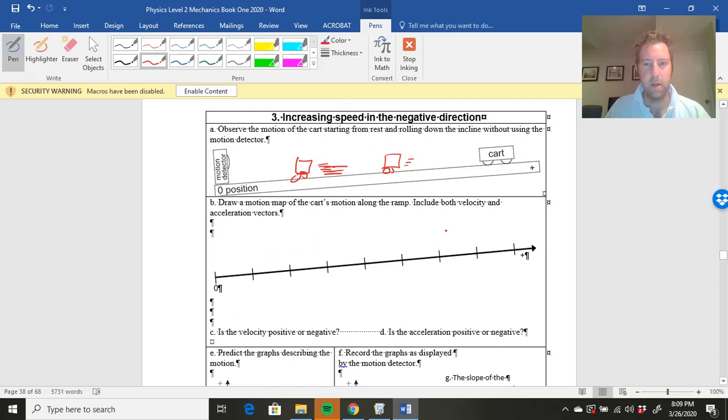Great. So hopefully you've had a go. I'm going to have what I would think is a good motion map. It starts up here. So I draw that and it starts off slowly. And it gets faster and faster. So that means the dots get further apart. I'm now going to draw my velocity arrows on them. I'm not very good at drawing here. This means we're going down the hill.